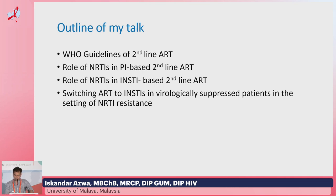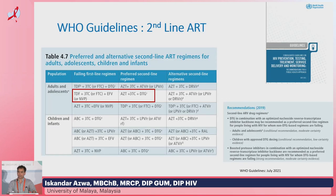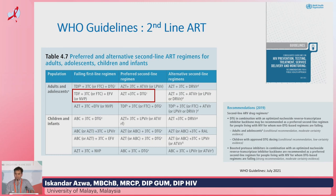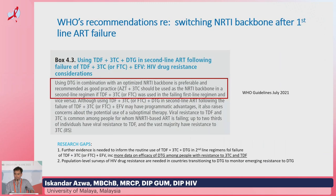WHO guidelines since 2019 have recommended the use of dolutegravir in combination with an optimized nucleoside backbone. If you started with a tenofovir and emtricitabine-based regimen combined with an NNRTI-based regimen, the recommendation was always to switch the nucleoside backbone to AZT and 3TC in line with predicted resistance on resistance testing, and this has remained till today.